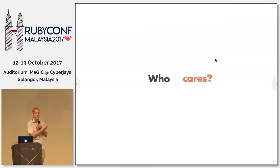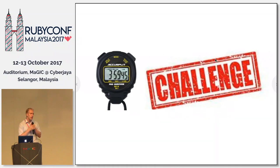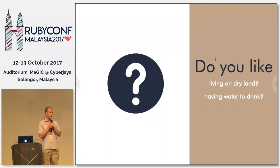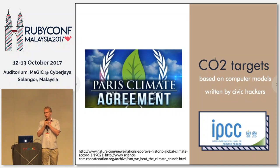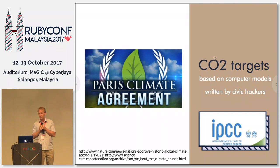You may be thinking: that's happening in the U.S. — how does that impact me? I have about 15 minutes, so if you give me seven of those, I think I can prove that civic hacking is actually all about exactly you. Do you like living on dry land and having water to drink? The Paris Climate Accords is basically humanity's biggest effort to combat drought, flooding, and the scourges of global warming. The CO2 targets that form the basis of the agreement are based on computer models, which in turn are based on work done by folks who are, by definition, civic hackers.